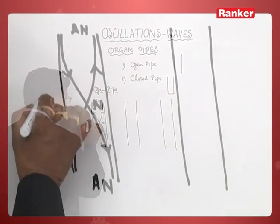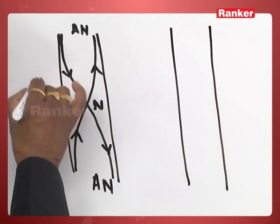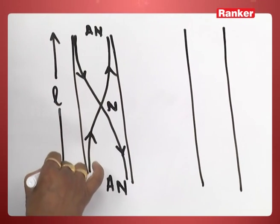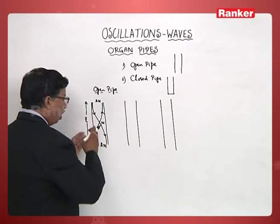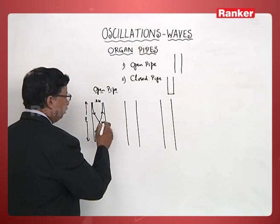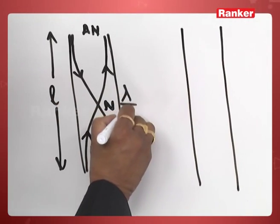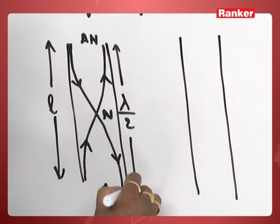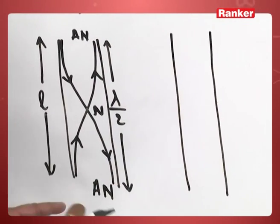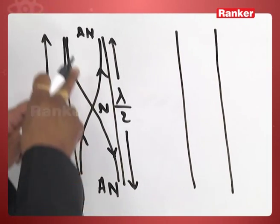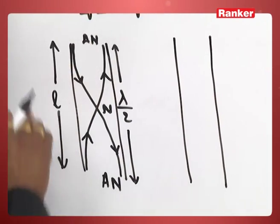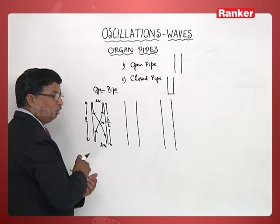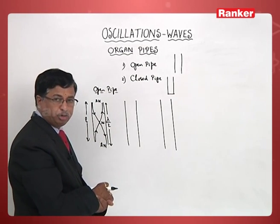Suppose I consider the geometric length of this pipe as L, then it is equal to lambda by 2. You can definitely understand: an antinode and immediately the next antinode — two successive antinodes in the case of a stationary wave.